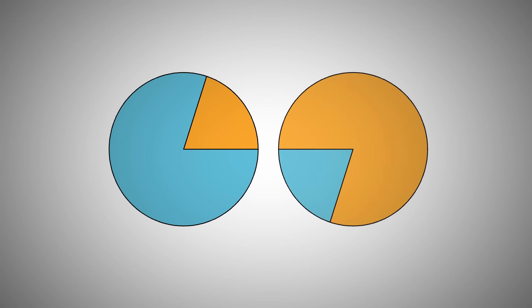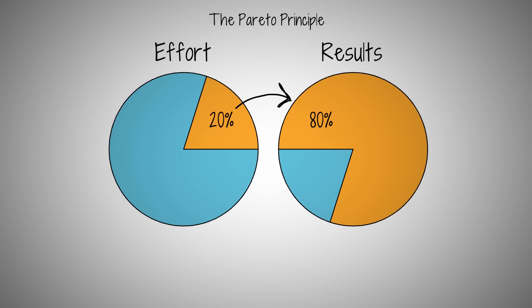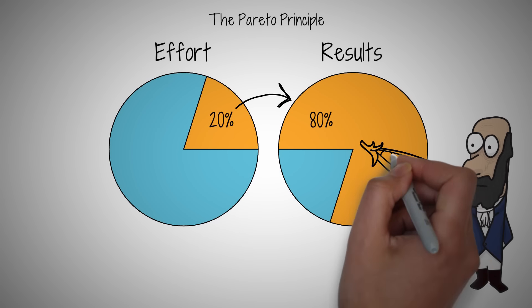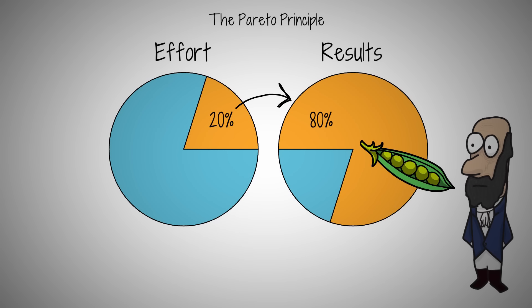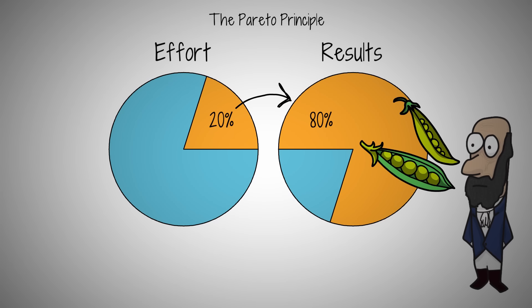Ever wondered why 20% of your efforts actually yield 80% of your results? This phenomenon, known as the Pareto Principle, is the key to transforming your productivity and focus. In the late 1800s, economist Vilfredo Pareto made an intriguing observation. 20% of the pea pods in his garden produced 80% of the peas. Intrigued, he applied this observation to wealth distribution in Italy and discovered a similar pattern. Roughly 20% of the population controlled about 80% of the land.